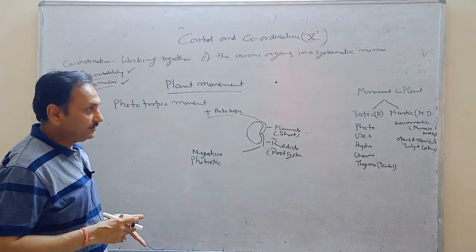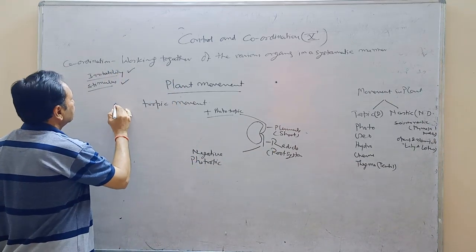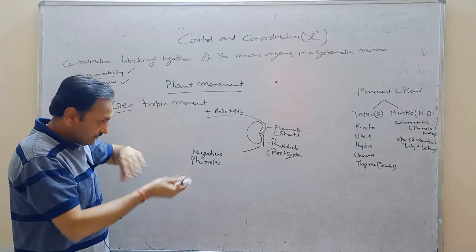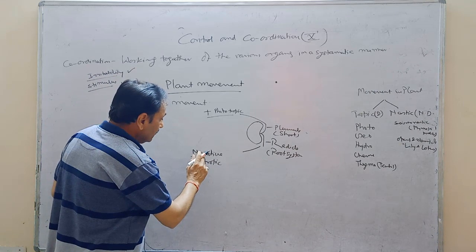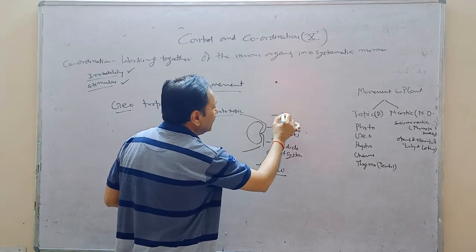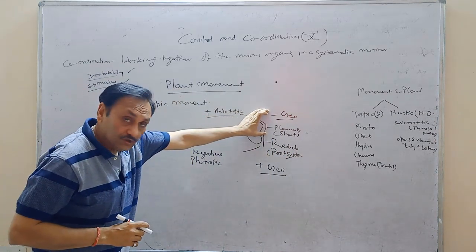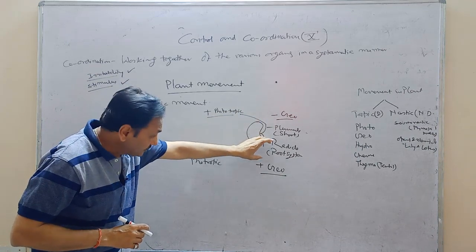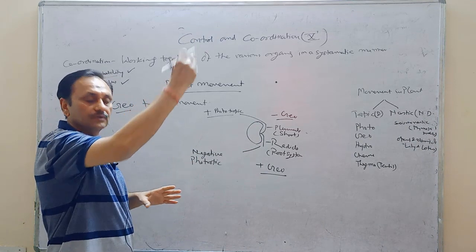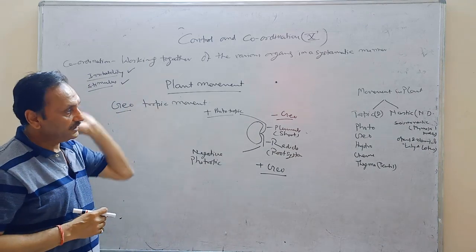In the same way, if we consider geotropism — movement towards gravitation — then we can say just the reverse. The root is positive geotropic, and the stem is negative geotropic. So the same example: the stem is positive phototropic and negative geotropic, while the root is negative phototropic and positive geotropic. The movement of the stem above the earth is negative to the gravitational pull — so it is negative geotropic. This has been observed in the germination of seed.